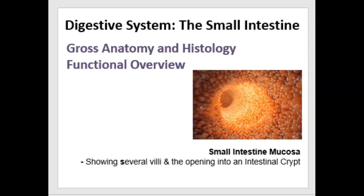Hello, this is Gina Piscitelli with a lecture on the digestive system, specifically the small intestine. In this lecture, I'll talk about the gross anatomy of the small intestine as well as its histological features, the different tissues found in the small intestine, and then finally a functional overview — things that the small intestine does for the digestive system. The picture on this introductory slide is a picture of the lining or mucosa of the small intestine. The little balloon-like bumps are called villi, and you can also see an opening into a tunnel — that's called an intestinal crypt.